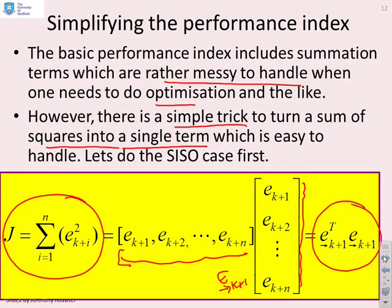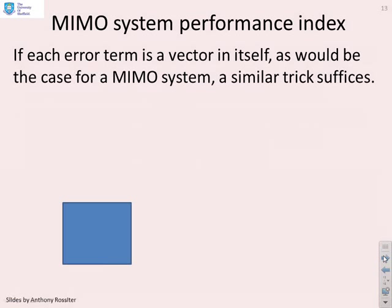If you had a multivariable system, each error term is a vector in itself. And you might think, oh, that's going to cause problems. But actually, it doesn't. You can use this identical algebra, as we'll show here. So, let's assume that it was multivariable. So, you had a sum from equals 1 to n of e transposed times e at the relevant samples.